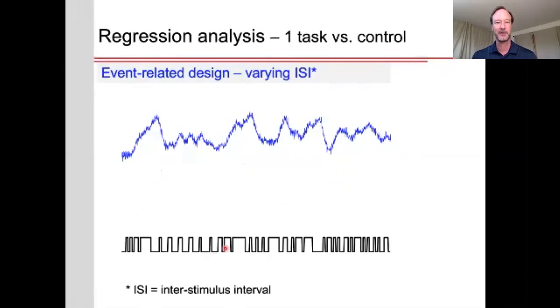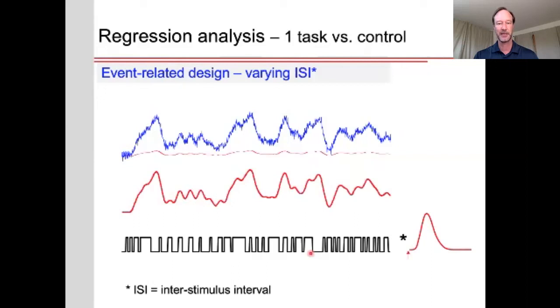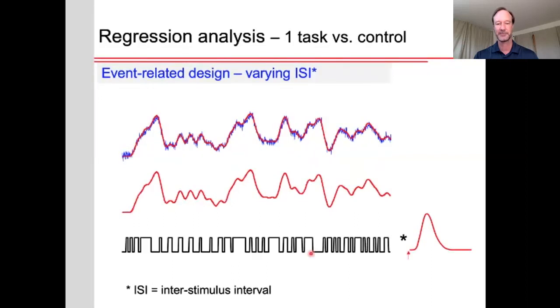Now, let's consider an event-related design with a varying interstimulus interval where the events occur more frequently, as indicated here, and this is what the BOLD response would look like. So again, we would take this stimulus timing, we convolve this with the hemodynamic response function, and we'd fit that to the data. Same steps.